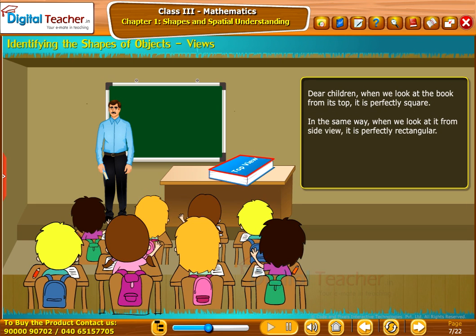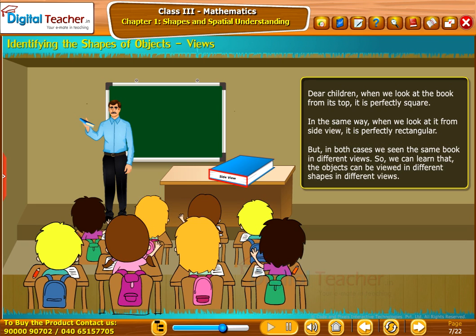In the same way, when we look at it from side view, it is perfectly rectangular. But in both cases, we seen the same book in different views. So, we can learn that the objects can be viewed in different shapes in different views.